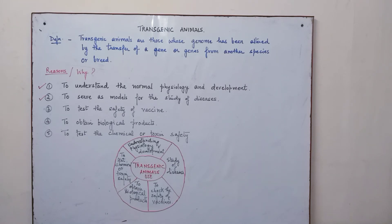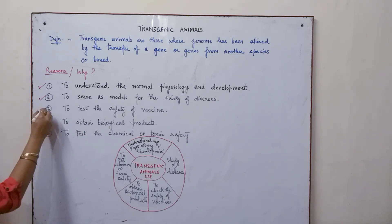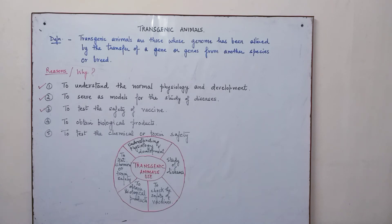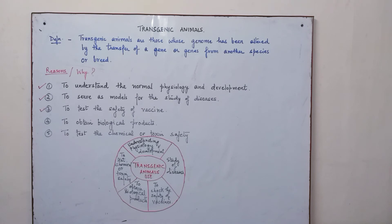The third use is to test the safety of vaccines. Before a vaccine is available on the market, it has to be properly tested. Transgenic mice are created to test vaccine safety. Once safety is confirmed on mice, it can be applied to human beings. Mice have in fact replaced monkeys, which were earlier used for vaccine testing.